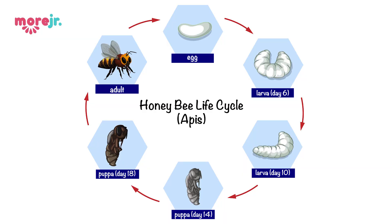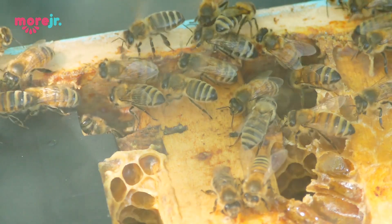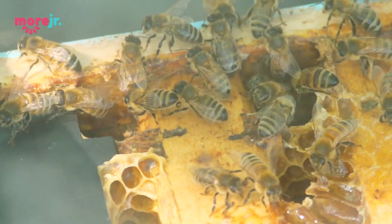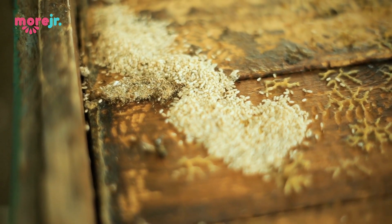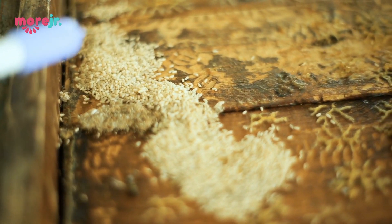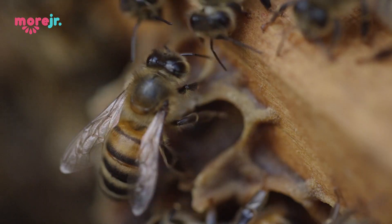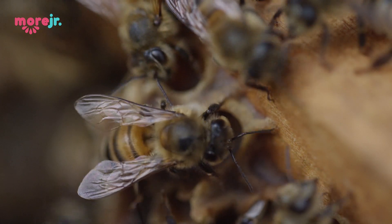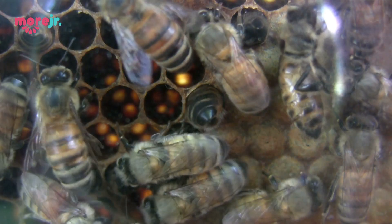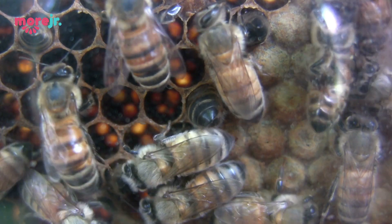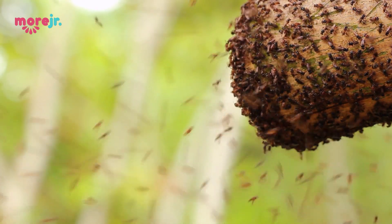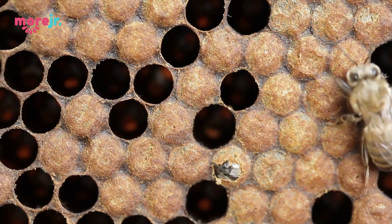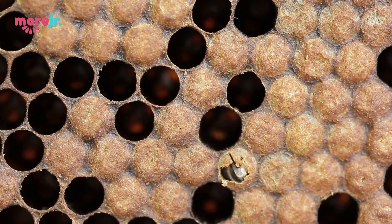Now I will tell you about the bee life cycle. First, the mother bee lays an egg in the cell. Then in three to four days, the egg hatches and a larva comes out, but it's still in the cell. Then it turns into a pupa. Then the mother bee comes and puts honey over the pupa, and the pupa eats the honey and grows into an adult bee.